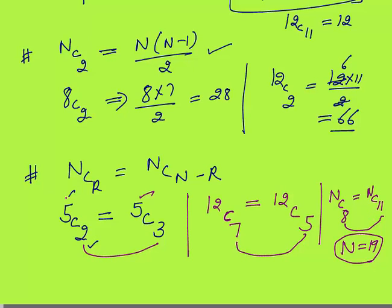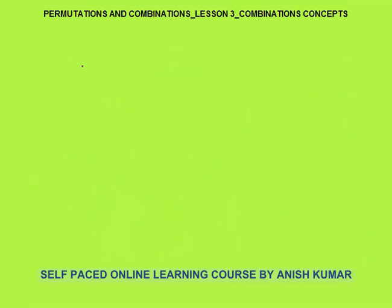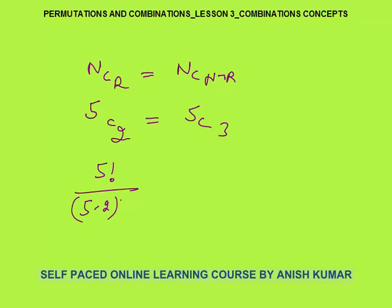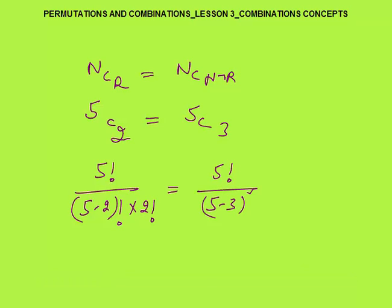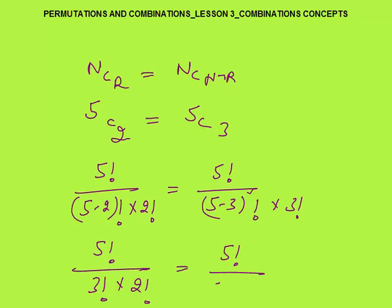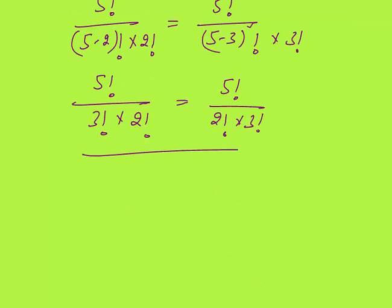Let me show you why NCR equals NCN-minus-R. NCR is N factorial upon (N-minus-R) factorial into R factorial. NCN-minus-R is N factorial upon (N minus (N-minus-R)) factorial into (N-minus-R) factorial, which simplifies to N factorial upon R factorial into (N-minus-R) factorial. You can see left side equals right side — that's why this formula holds.